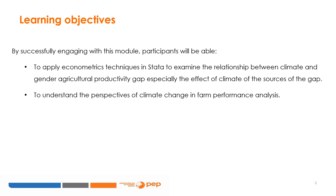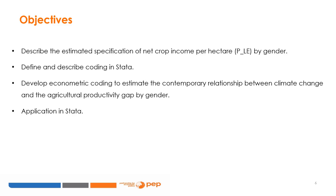This should help us to analyze the effect of climate change on agricultural productivity. The objectives of this course are to describe the estimated specification of plot productivity taking into account the gender issue, to explain the challenges in cross-sectional climate studies, to develop econometric coding to estimate the contemporary relationship between climate change and the GAPG, and to apply these techniques in STATA.